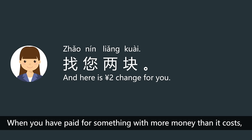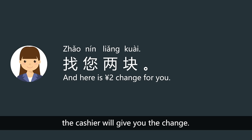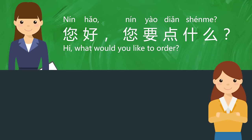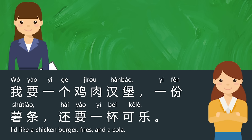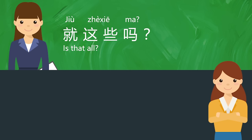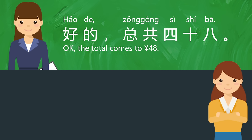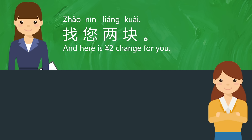Let's listen to the dialogue one more time. 您好！您要点什么？我要一个鸡肉汉堡，一份薯条，还要一杯可乐。就这些吗？就这些。好的，在这儿吃还是带走？带走。好的，总共四十八。给你五十。找您两块。OK.